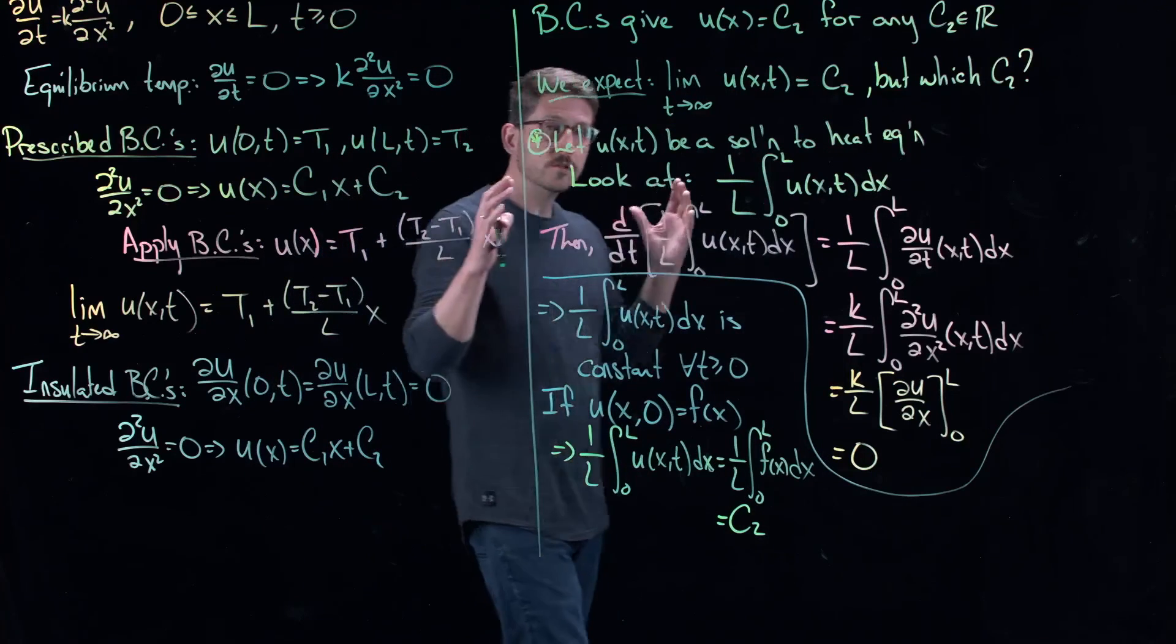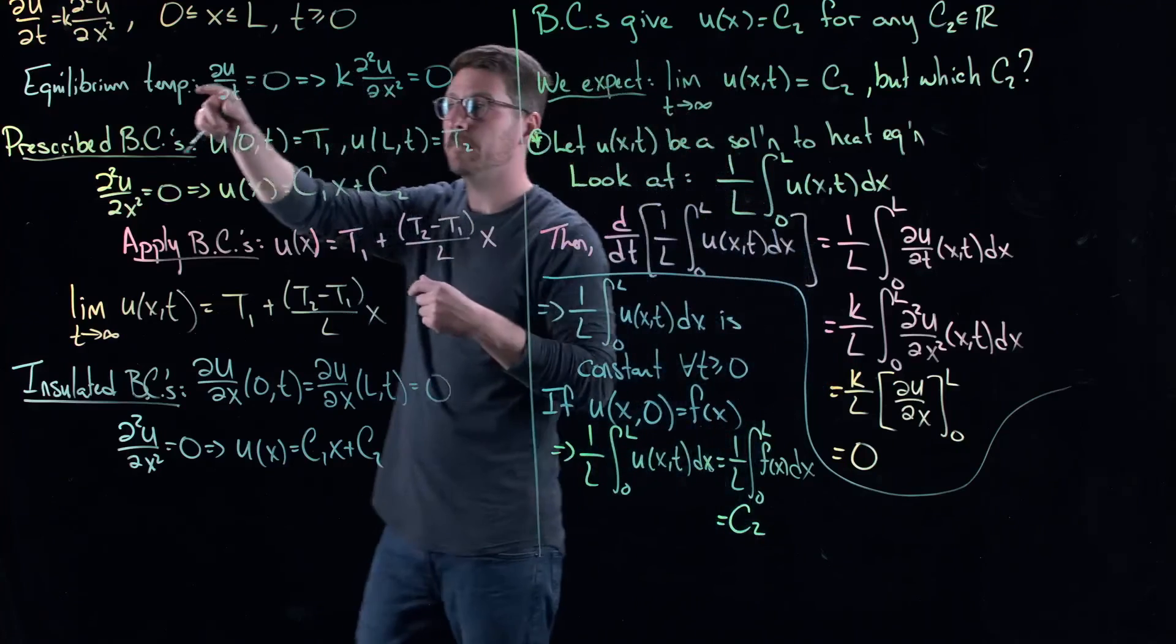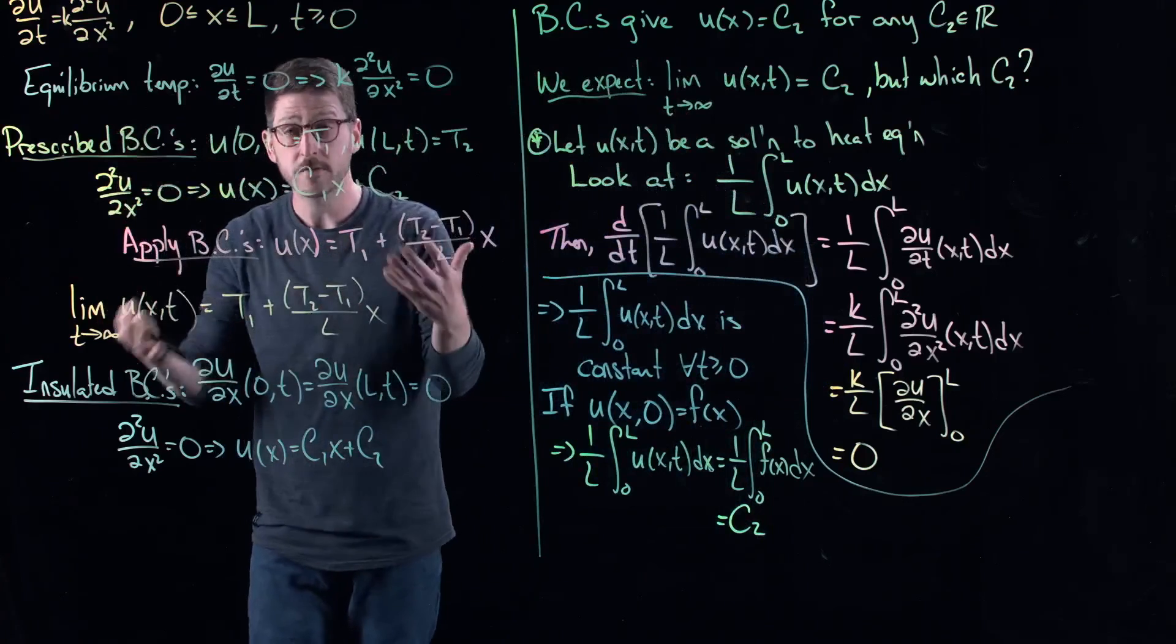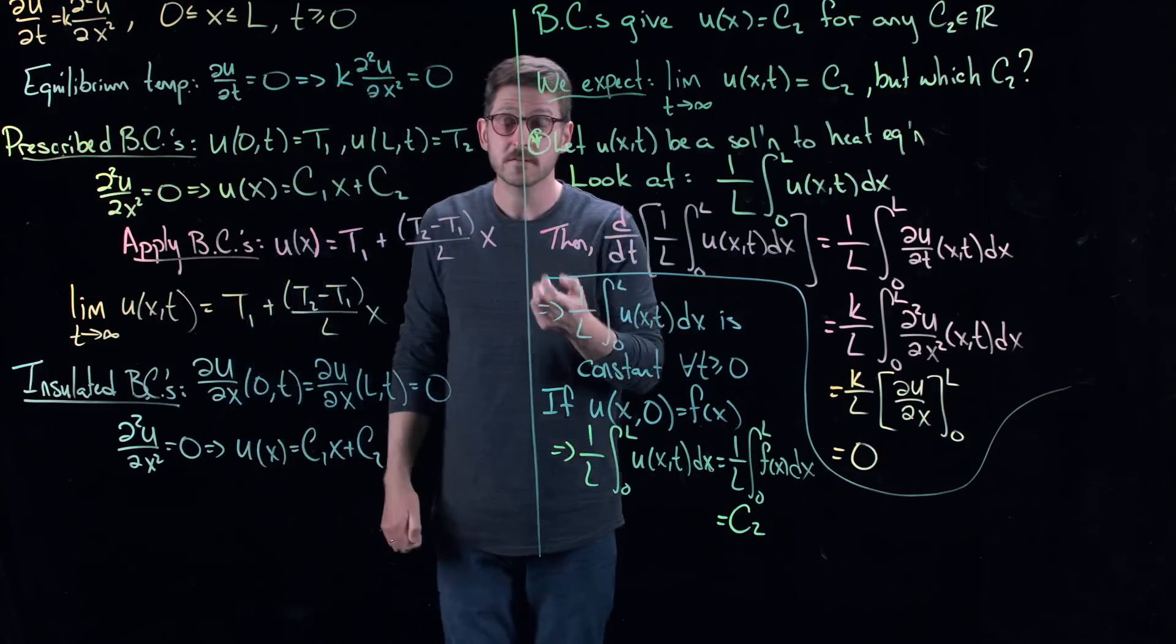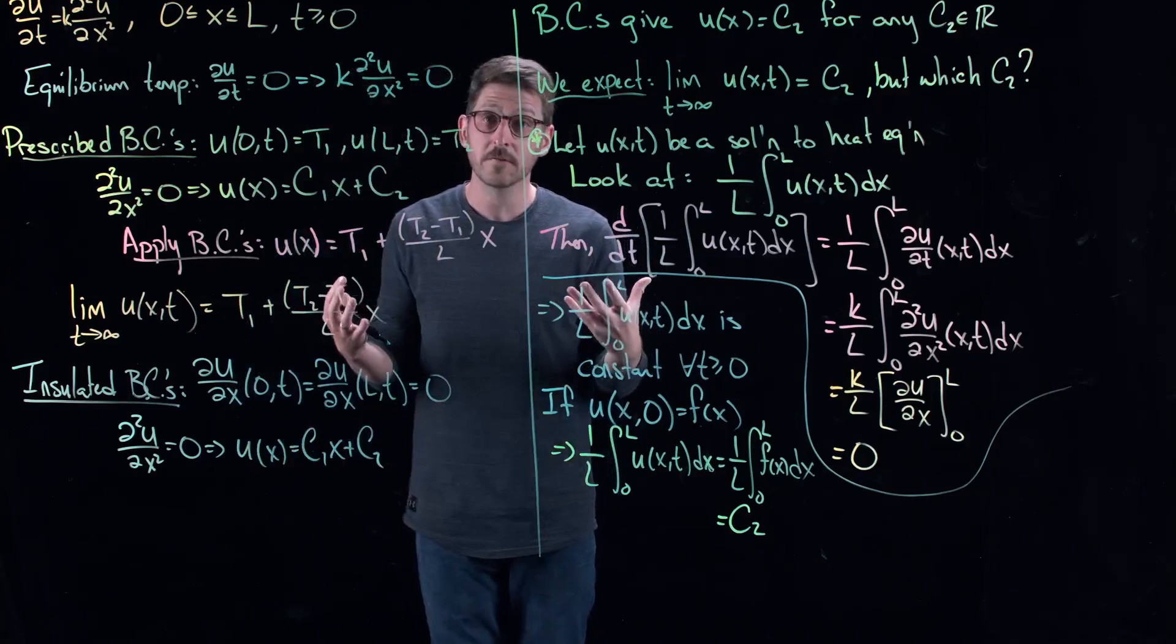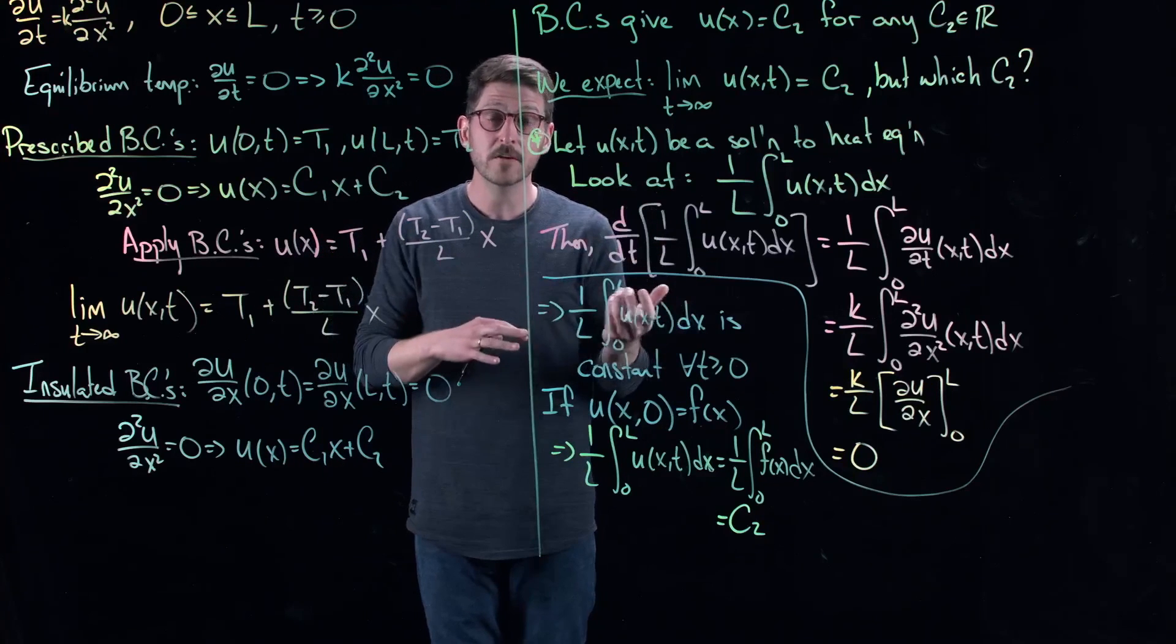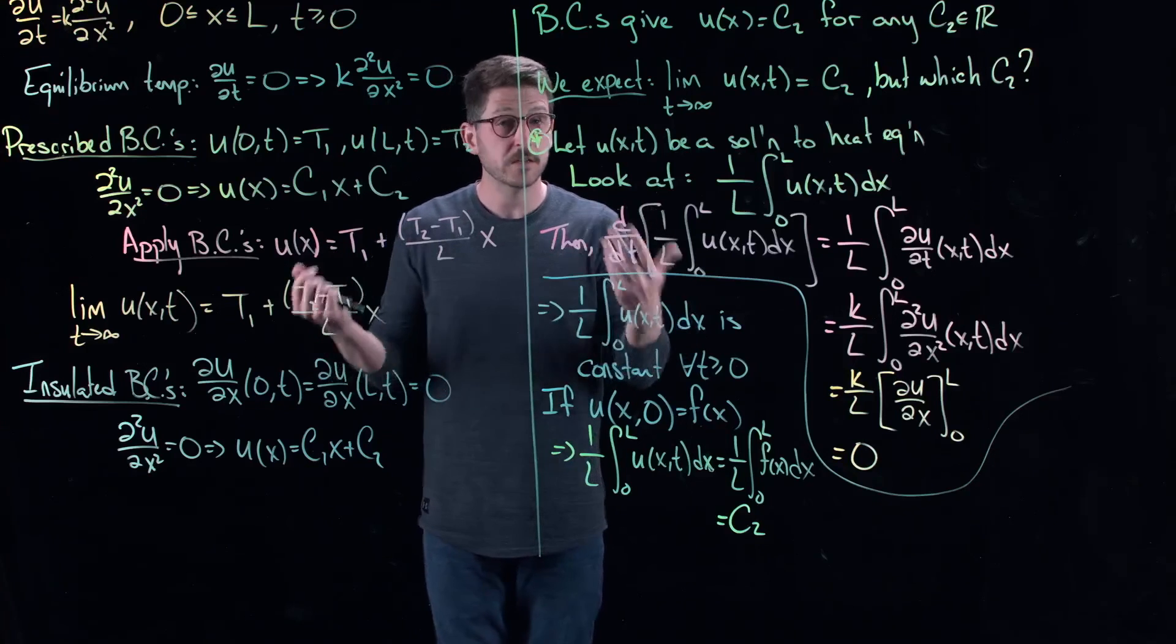Okay. So those are two examples of solving for equilibrium temperatures. You can put in different boundary conditions and you can find different types of solutions. What you should really try to do is maybe take an example of Newton's law of cooling, combine these two things and do Newton's law of cooling and see what the equilibrium temperature tells you and try and figure out physically what that means for the heat equation.